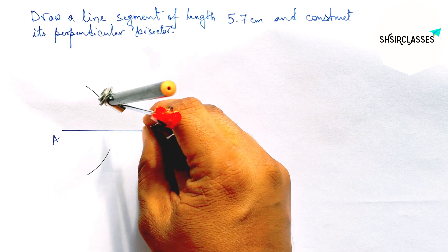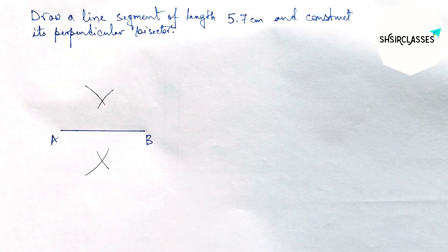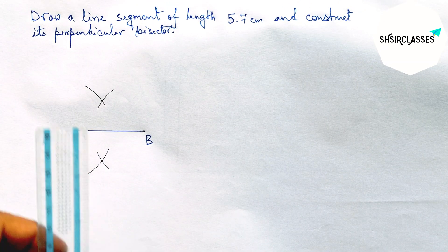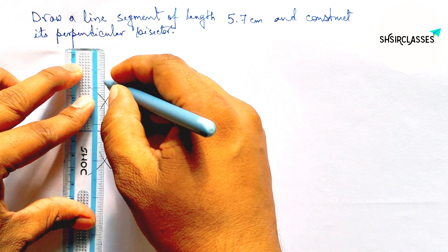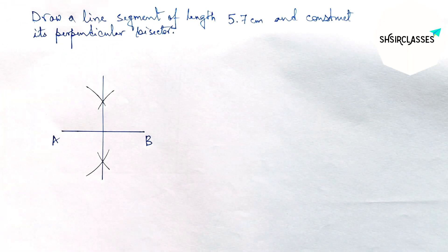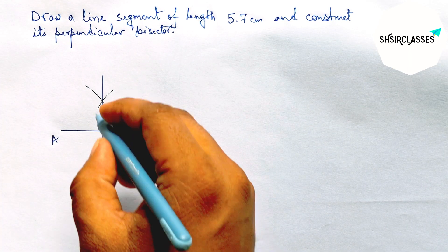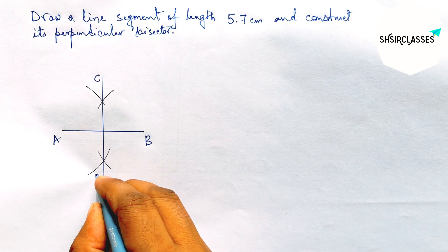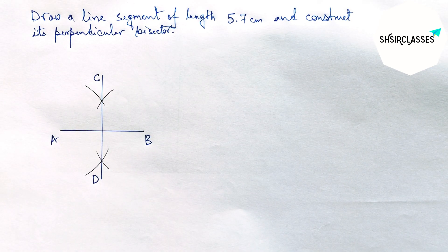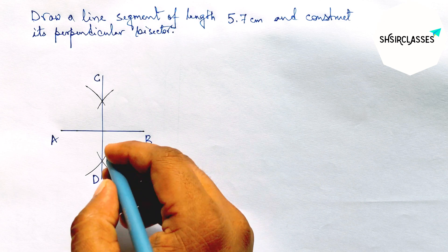Next, joining this and this is the required perpendicular bisector. So labeling here C and here D. AB and CD meet here at a point so taking point P.